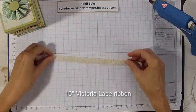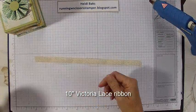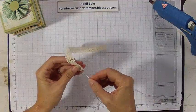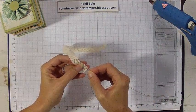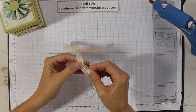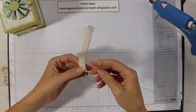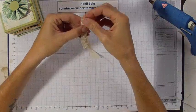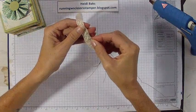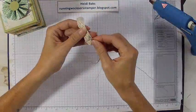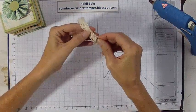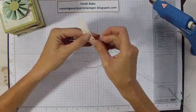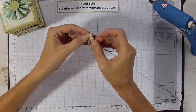The next thing we need to do is take 10 inches of the Victoria lace ribbon. And I have some linen thread in a needle already. And I just run what they call a running stitch. So just a stitch in and out of the holes. You keep doing this the whole length.